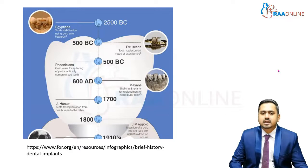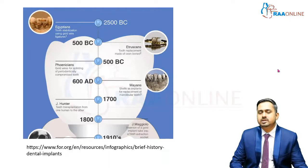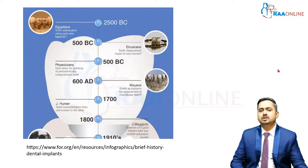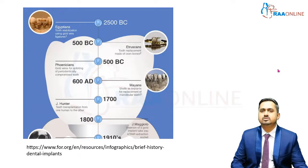Then J. Hunter, in 1700 AD, performed teeth transplantation — that is, teeth from one patient were transplanted to another human individual. After that, gold cylinders and gold tubes were placed in the fresh extraction socket to support restorations.